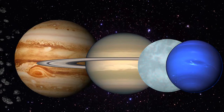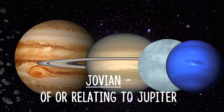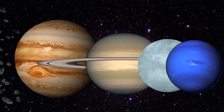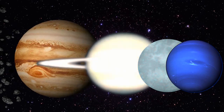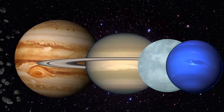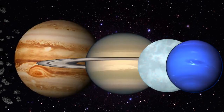These are the Jovian, or outer, planets. Jovian means of or relating to Jupiter. The Jovian planets are Jupiter, Saturn, Uranus, and Neptune. The Jovian planets are large, about 10 times the size of Earth. There are two types of Jovian planets: the gas giants, Saturn and Jupiter, and the ice giants, Neptune and Uranus.